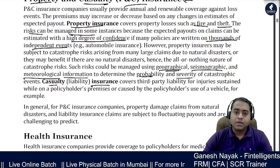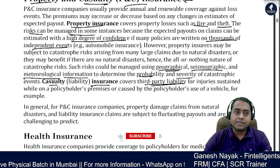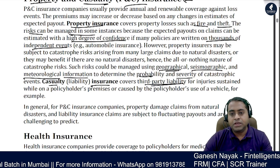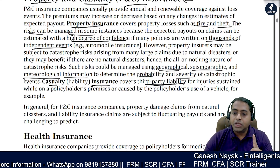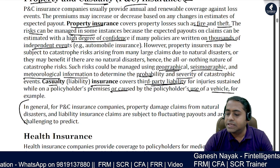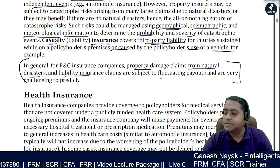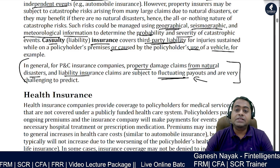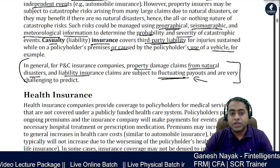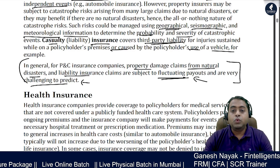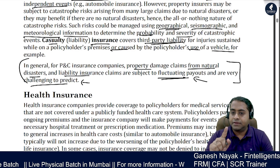Casualty insurance covers third-party liability. For example, if someone using my vehicle gets impacted, or someone comes to my property and gets injured, that is a third-party liability — and if I have taken a liability insurance, my insurance company pays. Property damage claims from natural disasters are relatively easy to predict. However, liability insurance claims are more subjective and variable — there is no historical data to reliably identify whether casualty insurance will be triggered, making it very challenging to predict.